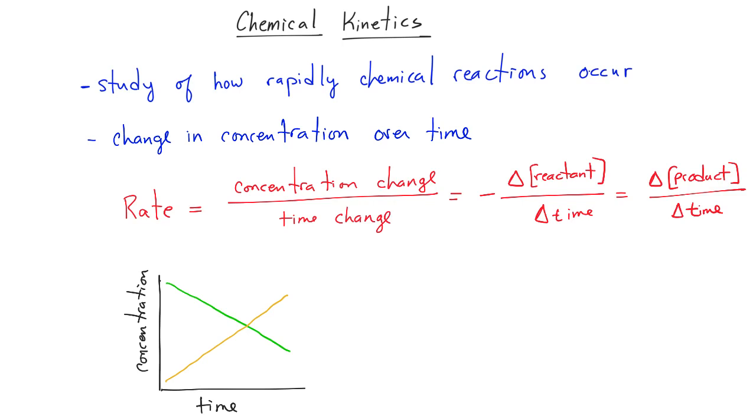Eventually, both of these rates will slow down and stop increasing or decreasing. That's called equilibrium, which will be the topic of the next couple chapters. In the study of kinetics, we're most concerned with this initial period of either increasing or decreasing concentration, called the initial rate.